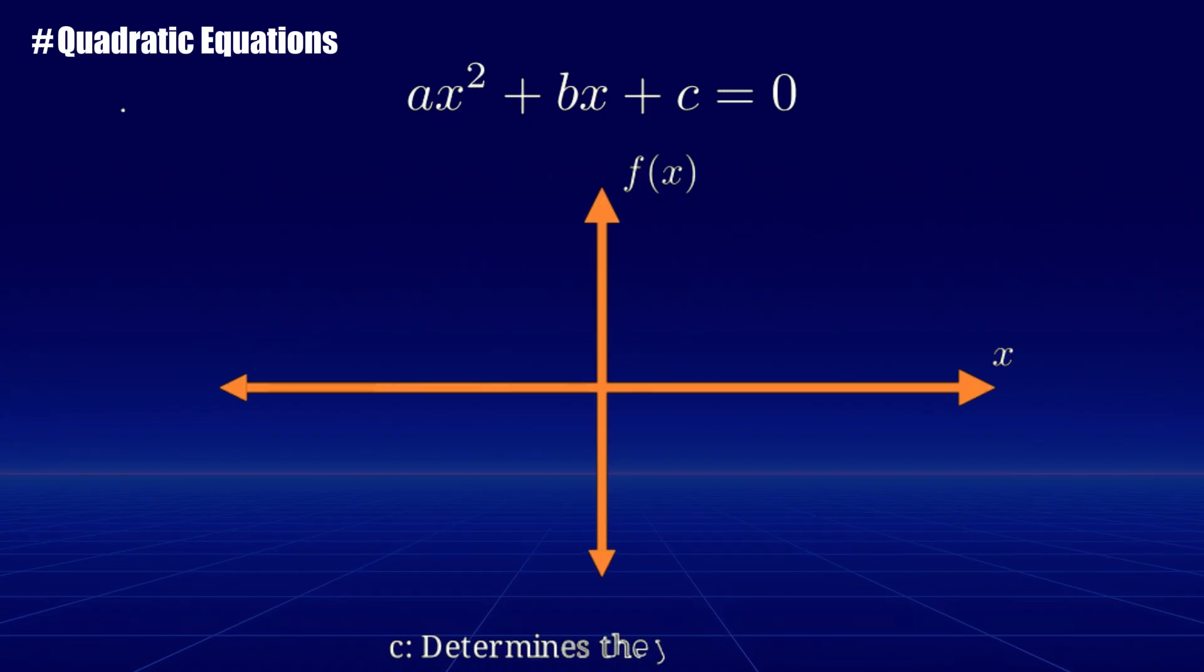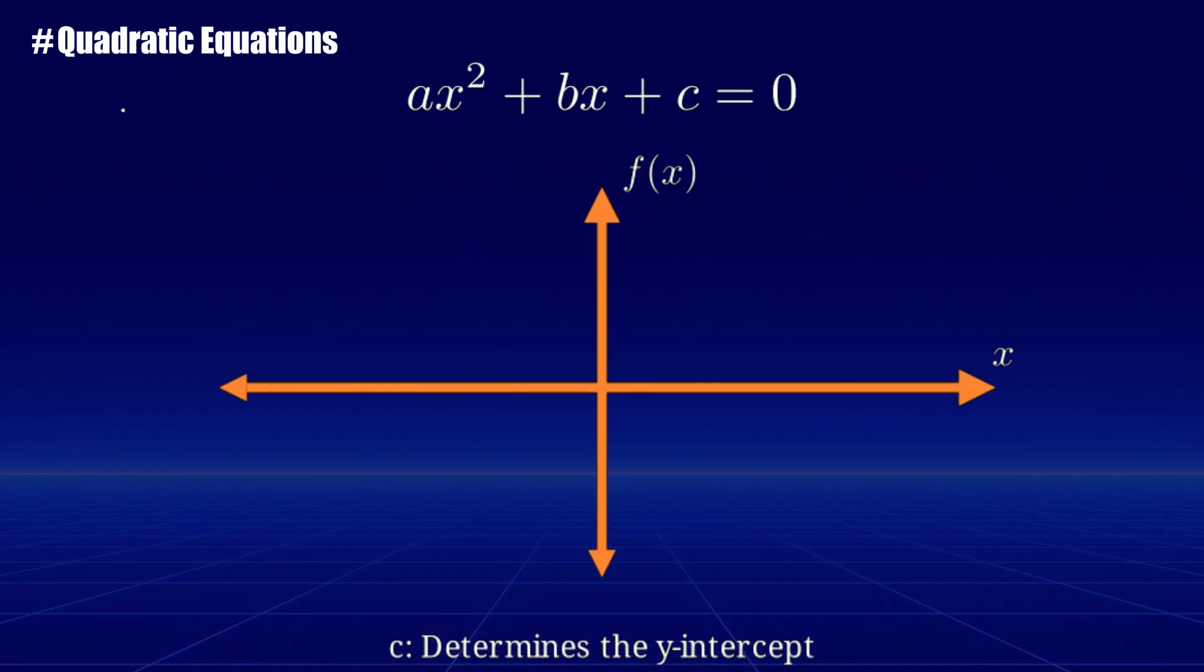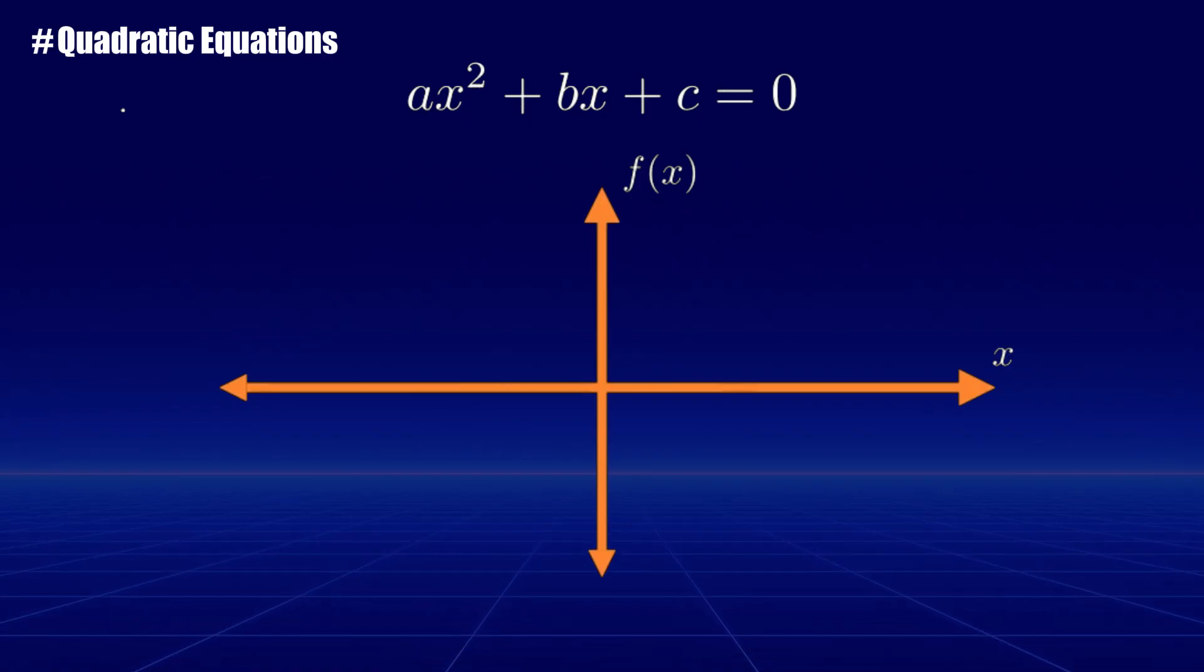The term c is the constant term. It sets the y-intercept where the parabola crosses the y-axis.